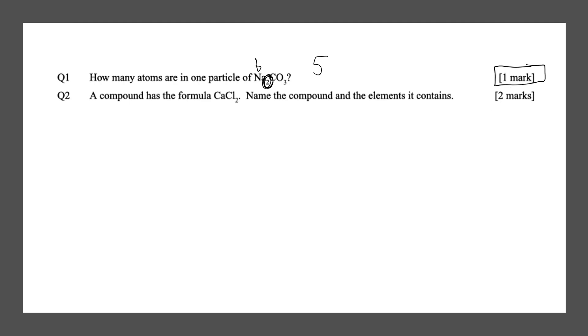A compound has the formula CaCl2. Name the compound and the elements it contains. If we can find out the elements it contains, then we can combine those 2 elements to find out the name of the compound.